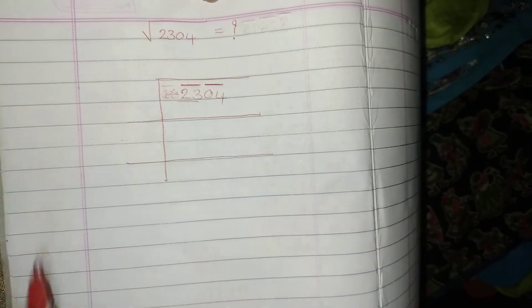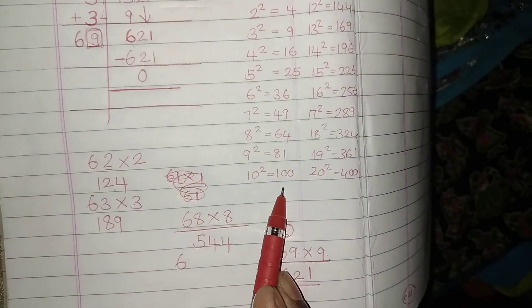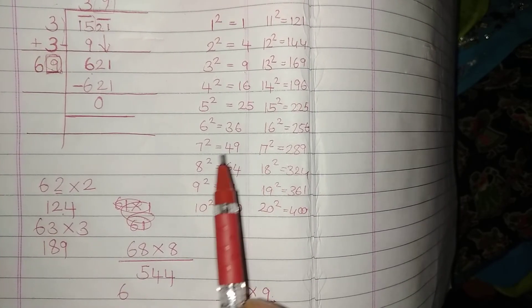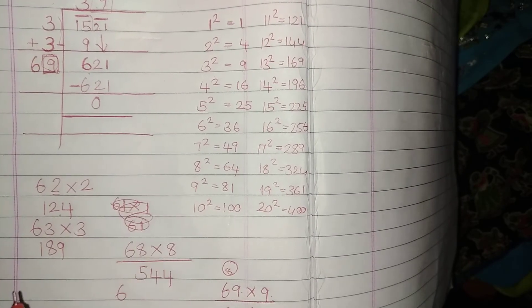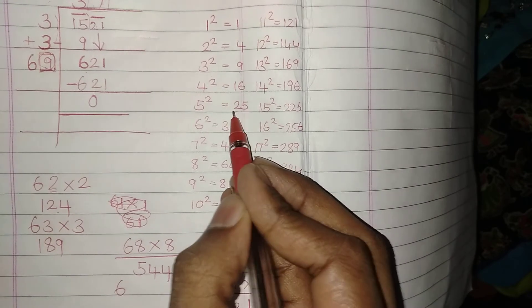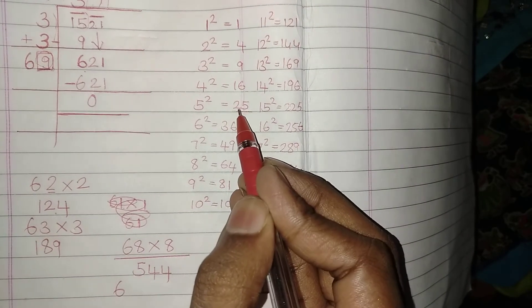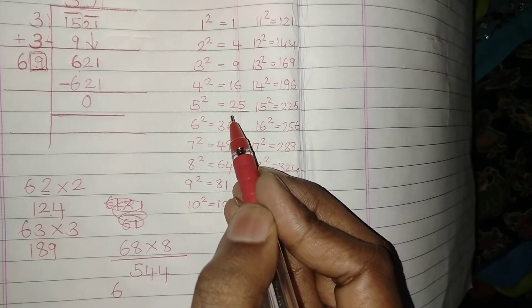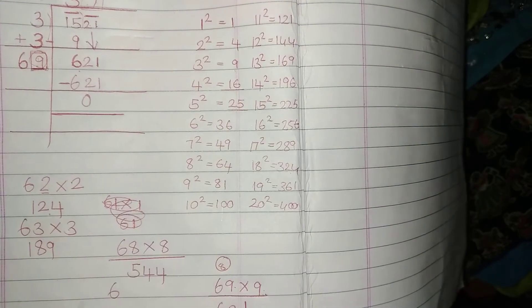Now 23, in which perfect square do I get 23? I don't get 23 in any perfect numbers, but check the number which is closest and smallest to 23. I can't take 25, even though it is closest or nearer to the number called 23, it is greater than 23.